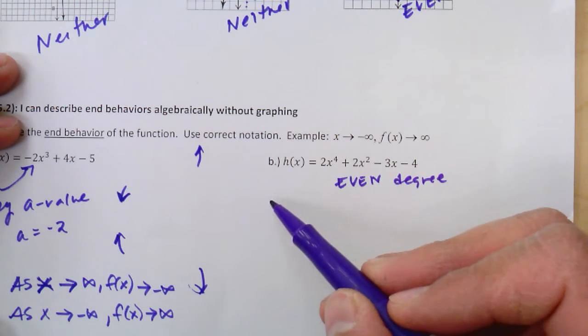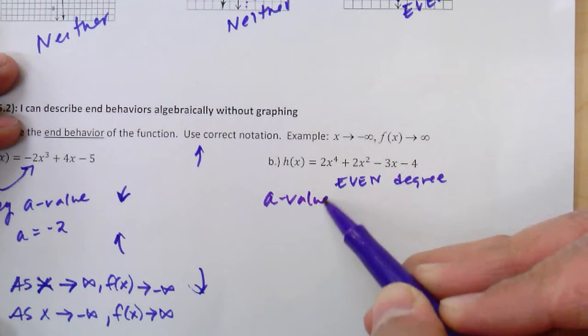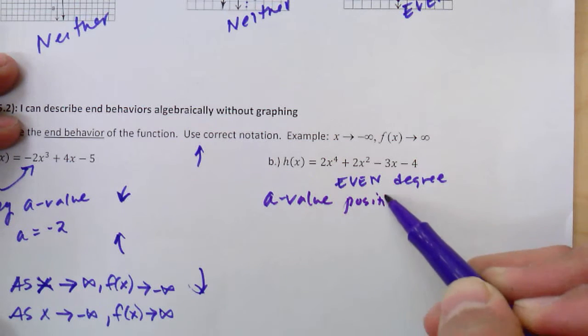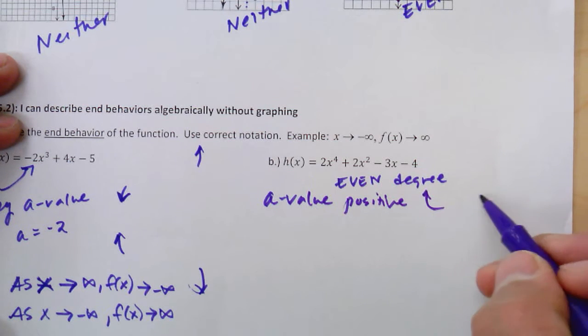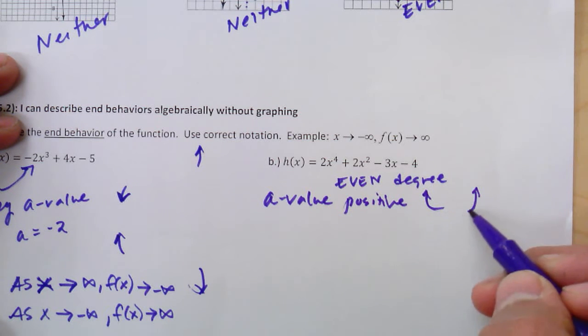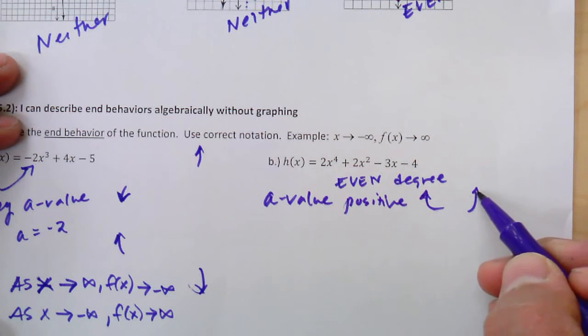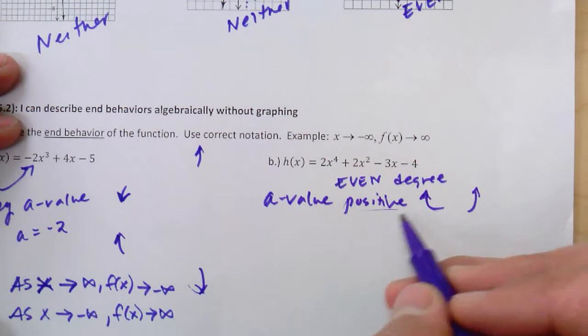So all evens, if the leading coefficient, the a value, happens to be positive, they're going to both finish in the same direction. They may wiggle and turn in here, but they're going to finish in the same direction. And this is when a is positive.